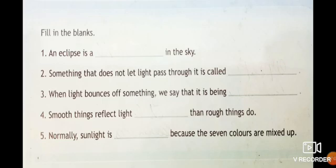When light bounces off something, we say that is being reflected. Smooth things reflect light better than rough things do.